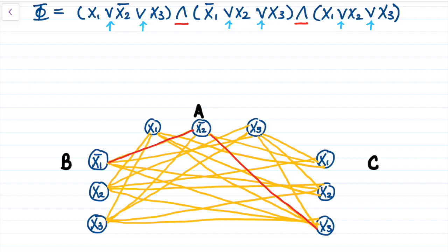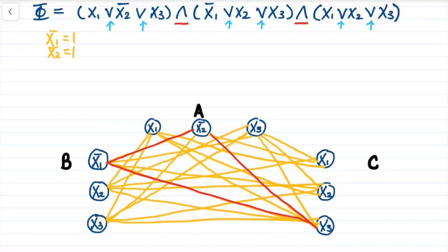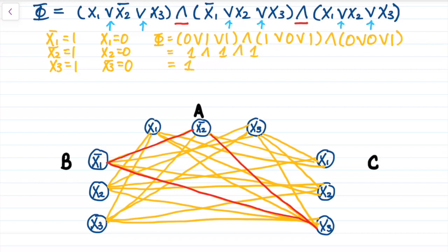We can do this in the other direction as well, by picking out a clique of size 3 on our graph, from side B to A with x1 bar connecting to x2 bar, then from side A to C with x2 bar connecting to x3, and finally from side C to B with x3 connecting to x1 bar.